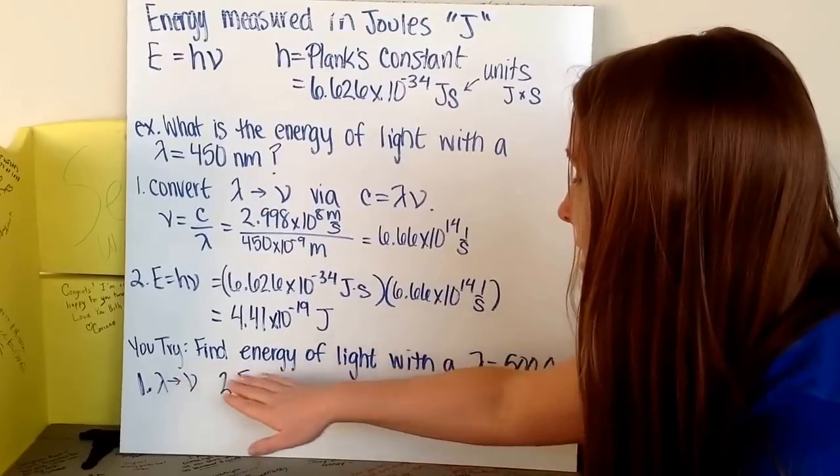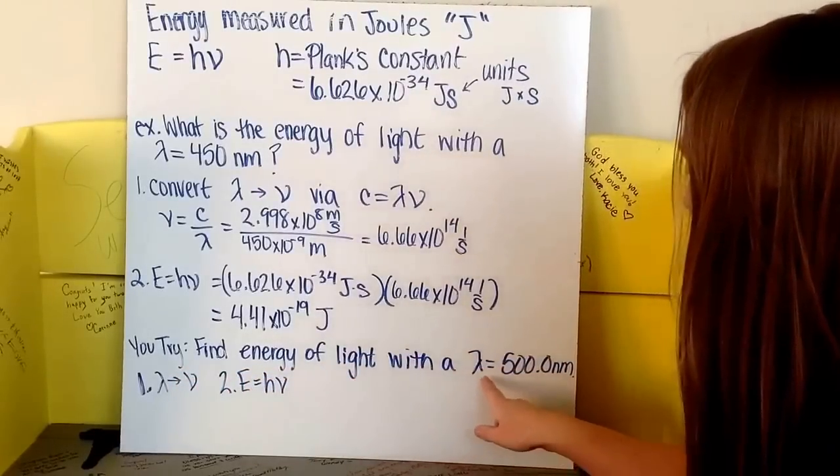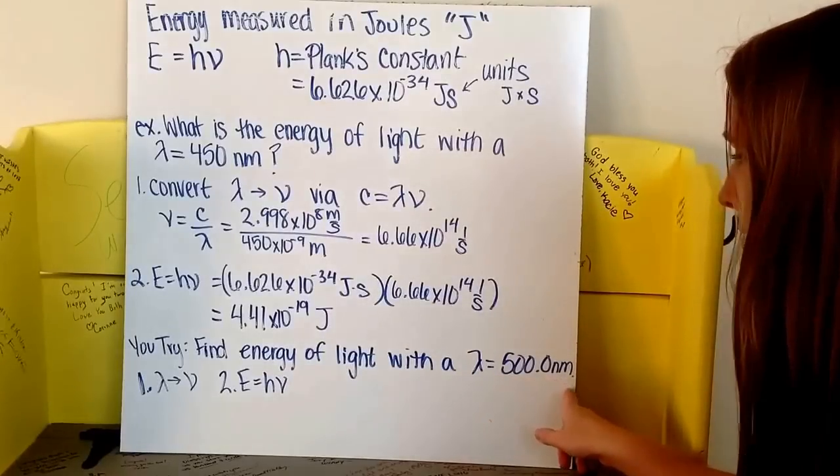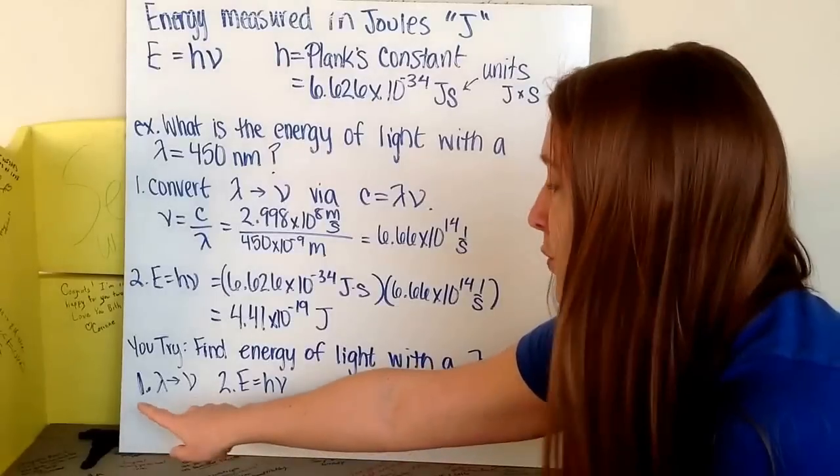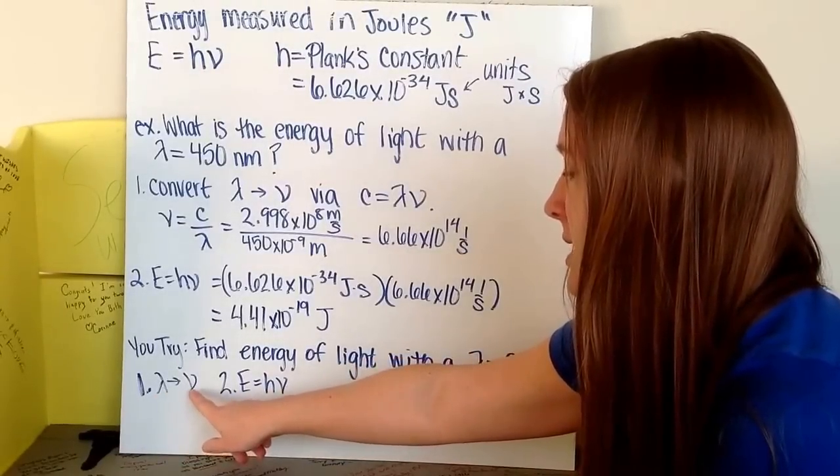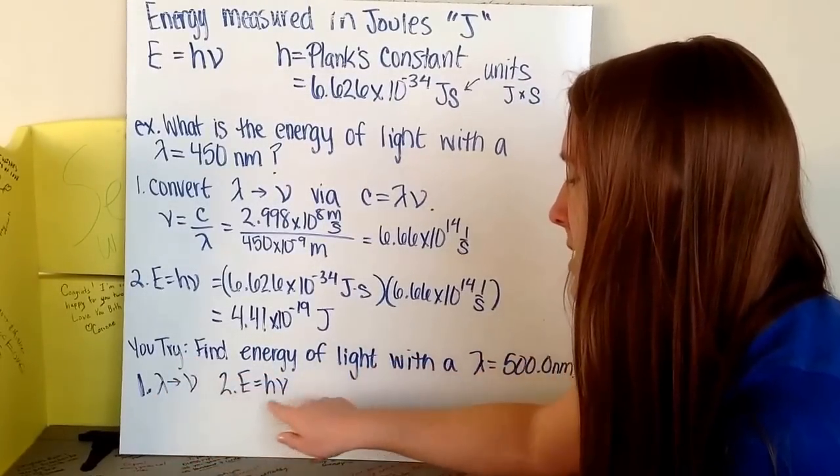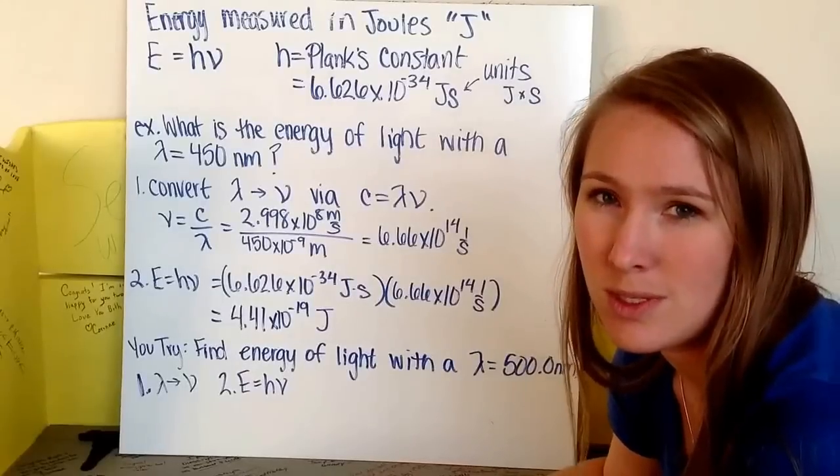Now go ahead and try to find the energy of light with a wavelength equal to 500 nanometers. Remember first that we need to go from our wavelength to frequency, and then once we know our frequency, then we can use our equation of E equals H times nu.